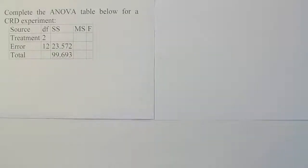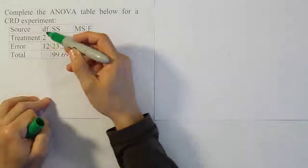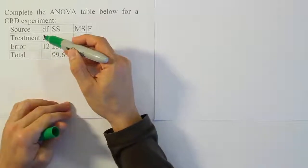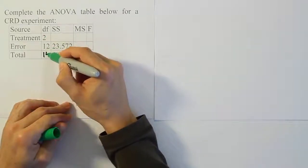So again, they want us to complete the ANOVA table for the following CRD experiment. To get this missing degrees of freedom, it's pretty easy. We know that this column must sum up to give us the total degrees of freedom, so 2 and 12 make 14, of course.